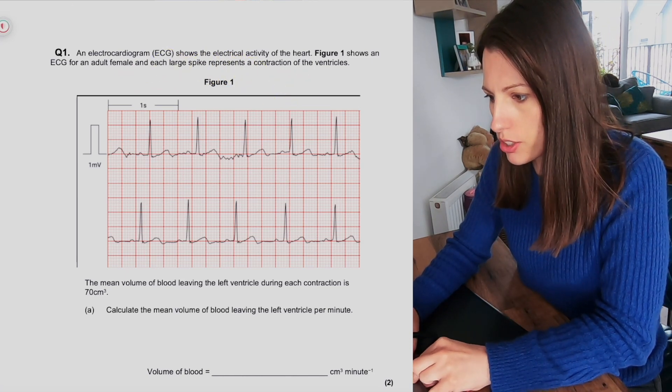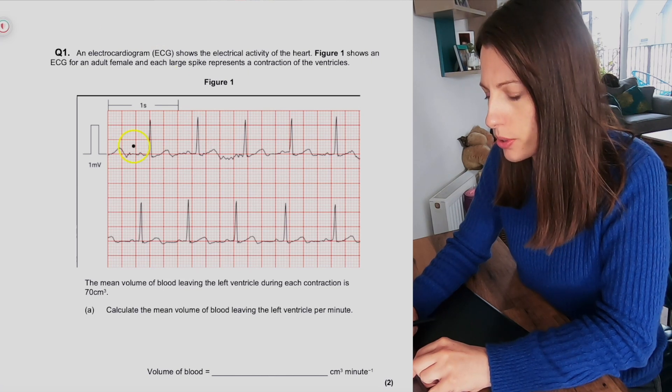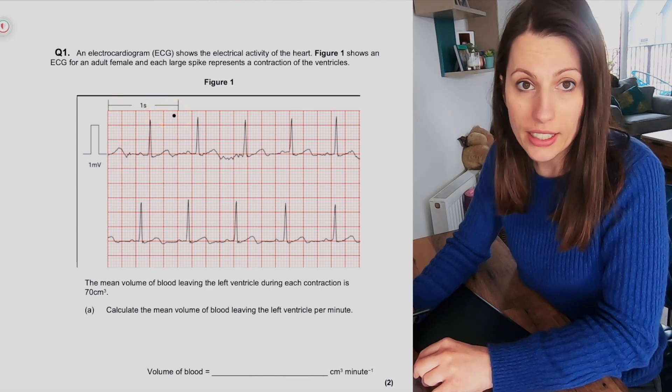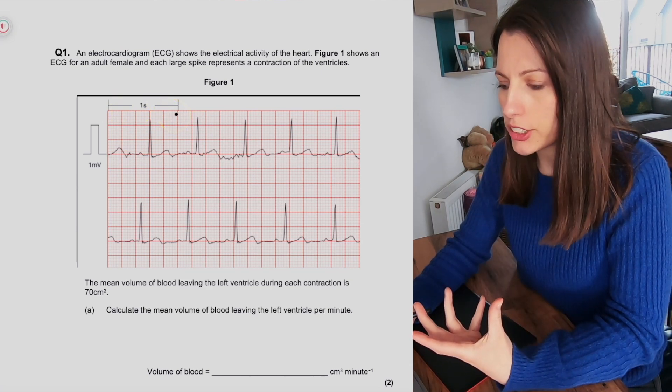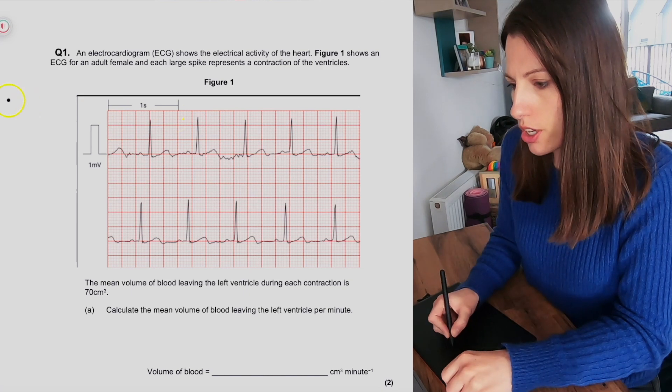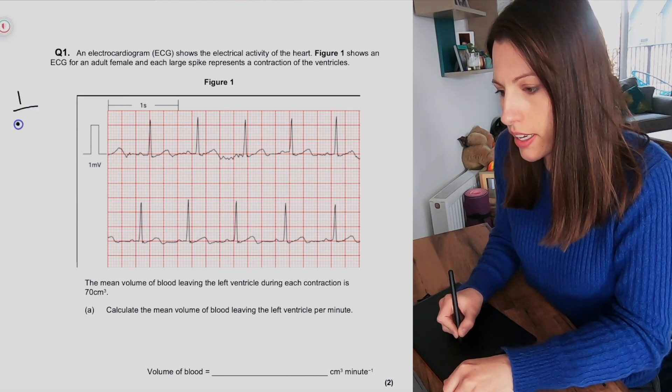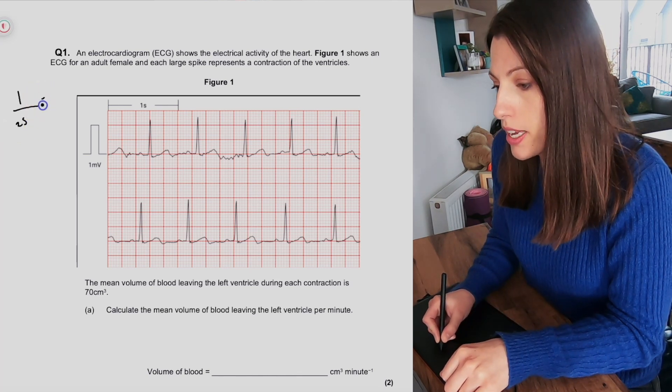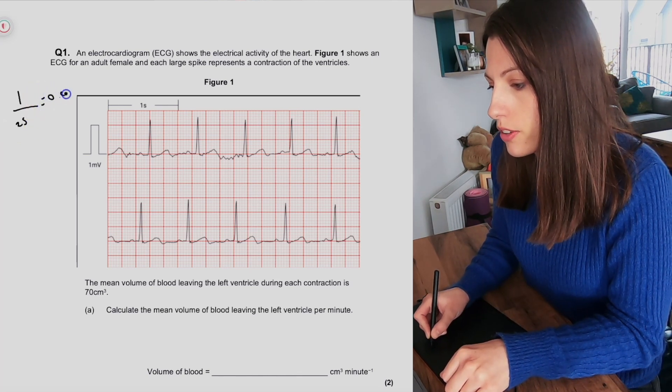So I'm just going to be able to draw here. We've shown that five large squares is one second, and that's actually 25 squares in total. So if we were to do 1 divided by 25 to work out what each small square is worth, that would be 0.05.